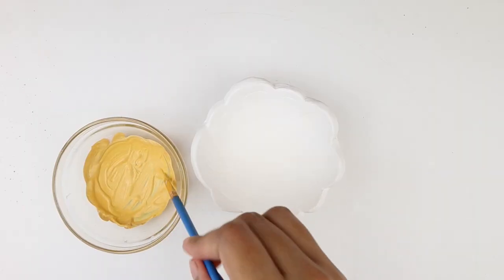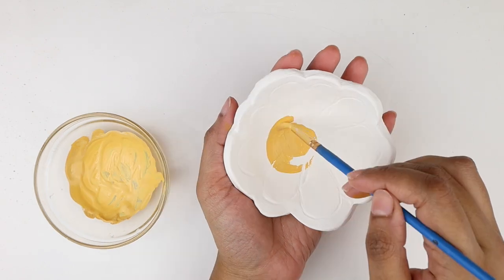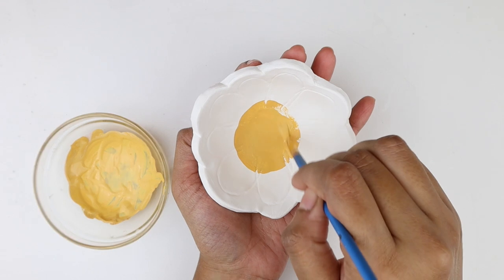Then I'm taking this light yellow paint and painting a circle in the center of the bowl. I'm working slowly with my brush and building up the shape. It doesn't have to be a perfect circle and we can also go back with the white paint to fix any mistake.